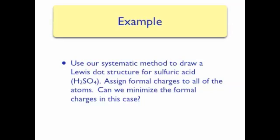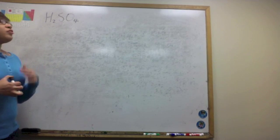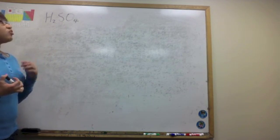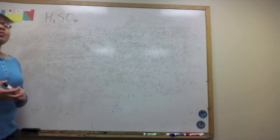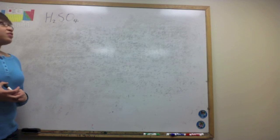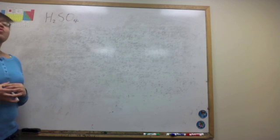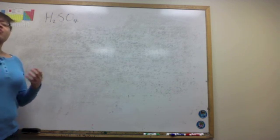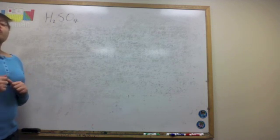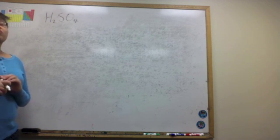In the next part of this video, we will use our systematic method to draw a Lewis structure for sulfuric acid. We will assign this structure formal charges to see if it has a minimal number of formal charges, and then we will minimize those formal charges. We will use the Lewis structure for sulfuric acid, H₂SO₄, to demonstrate how to minimize formal charges. Our systematic method is a very good way to begin drawing a Lewis structure — it gives us something to work from.